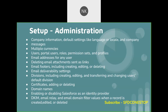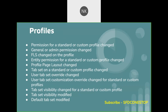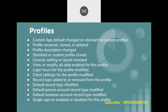Getting into the details, under the administration section these are all the different components that can be tracked using the Setup Audit Trail. If you are making any changes to company information, users, emails deliverability, domain names, DKIM — all of these changes can be tracked. Under the profile section, these are all the various components that can be tracked — including profile and layout changes and a lot of different components.